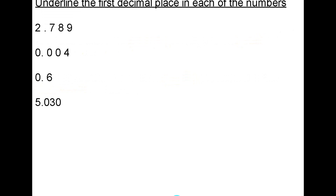In these examples, if I want to underline the first decimal place, what I need to do is underline the first digit after the decimal point. So in the first question, that's going to be seven. In the second, it's going to be zero. The third, it's going to be six. And the fourth one, it will be zero again.